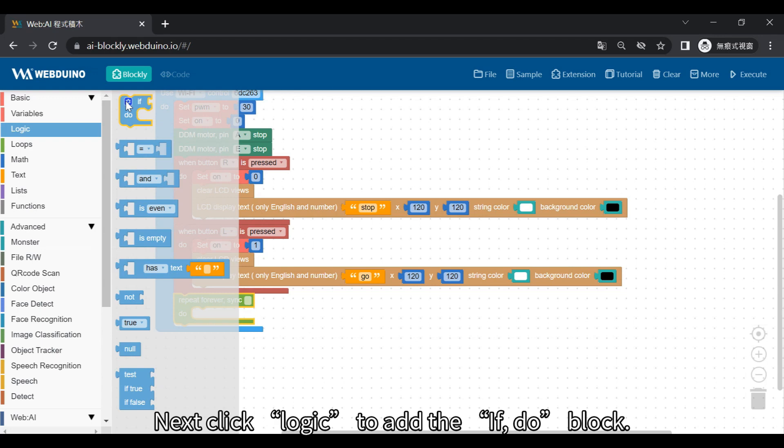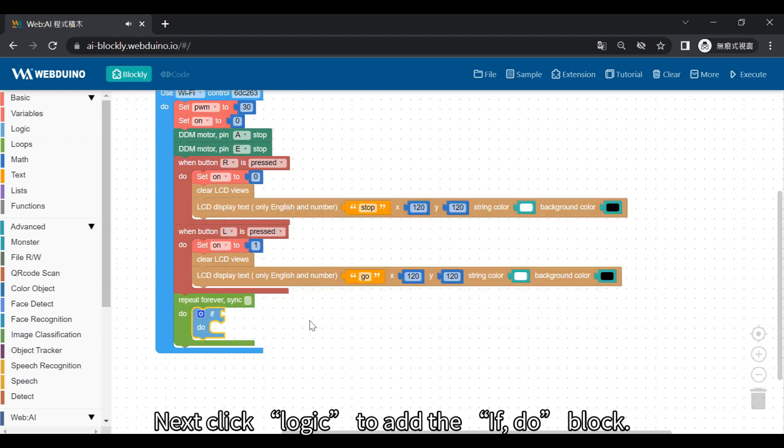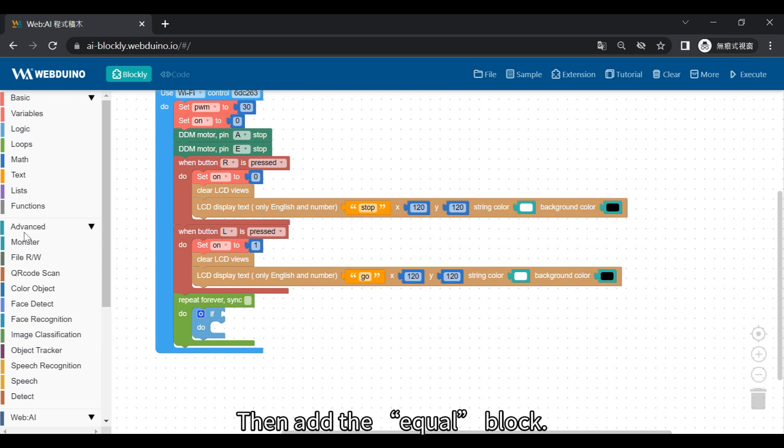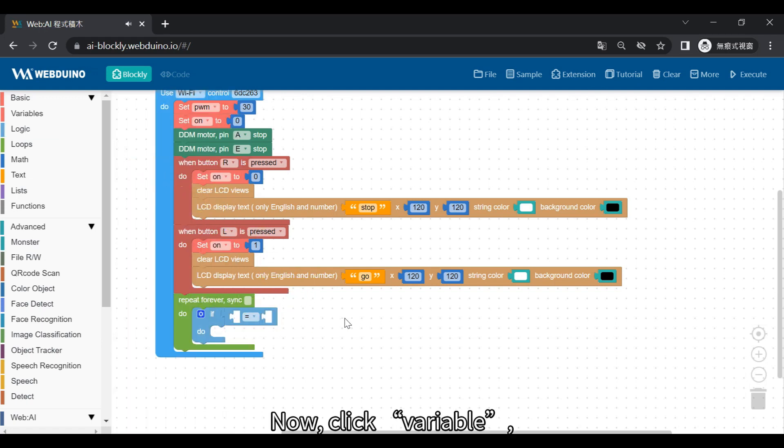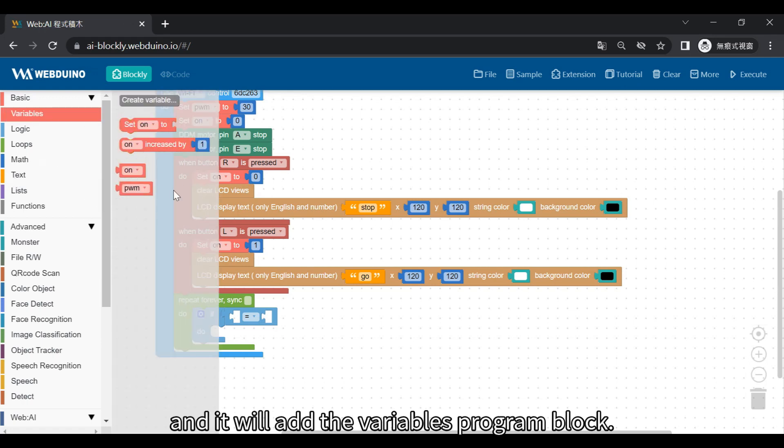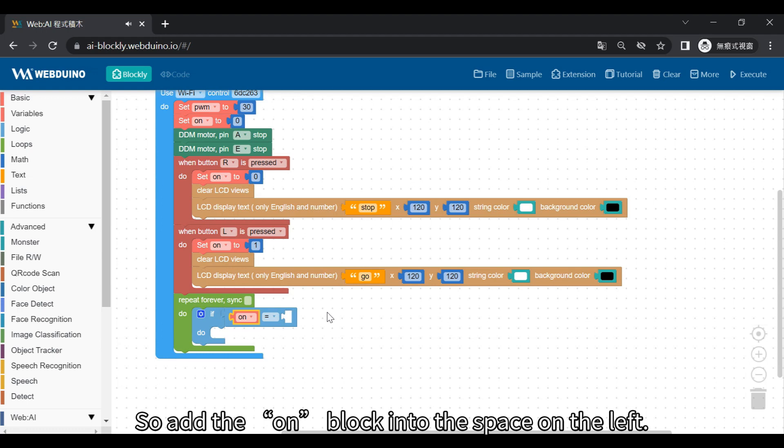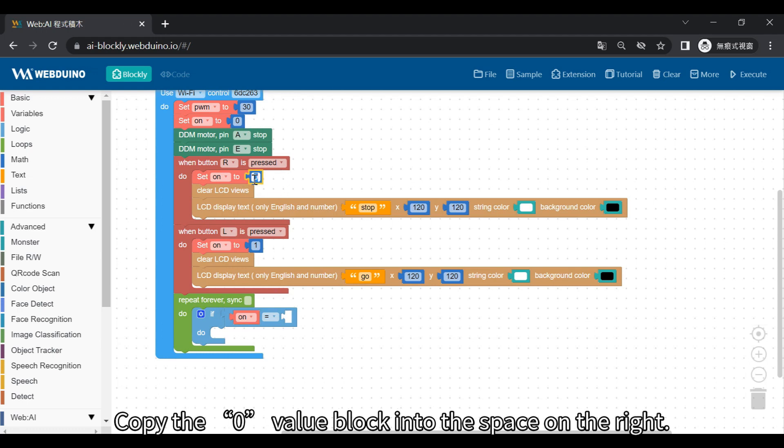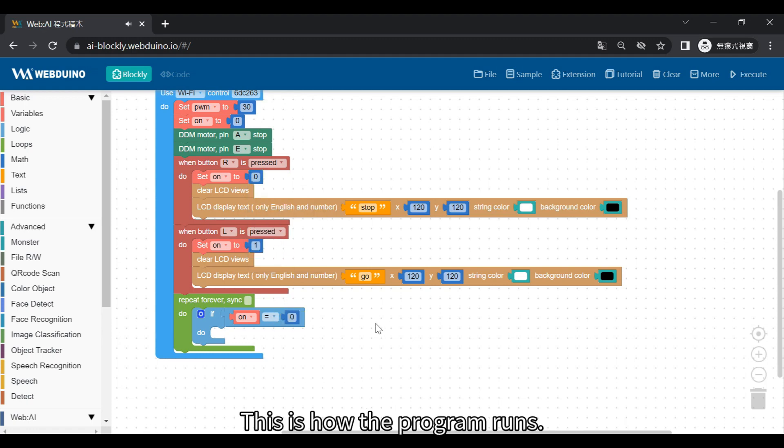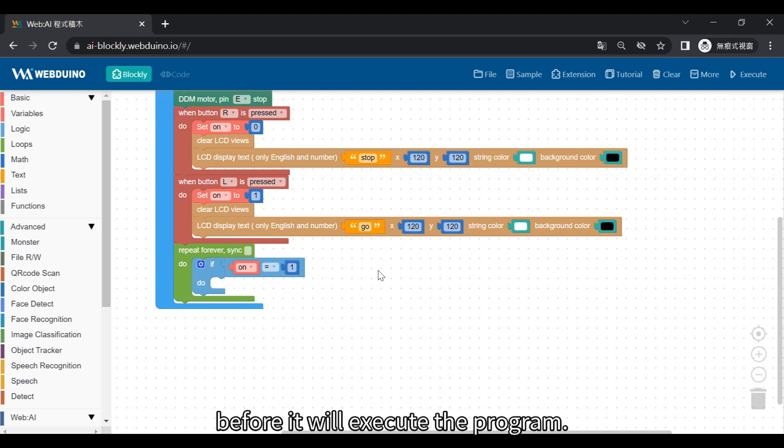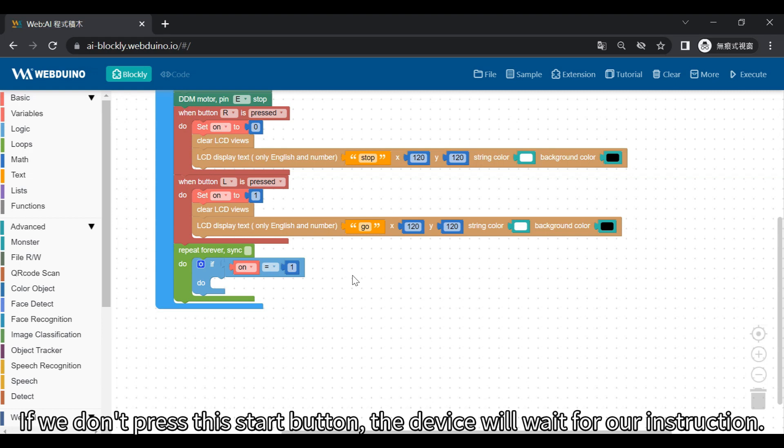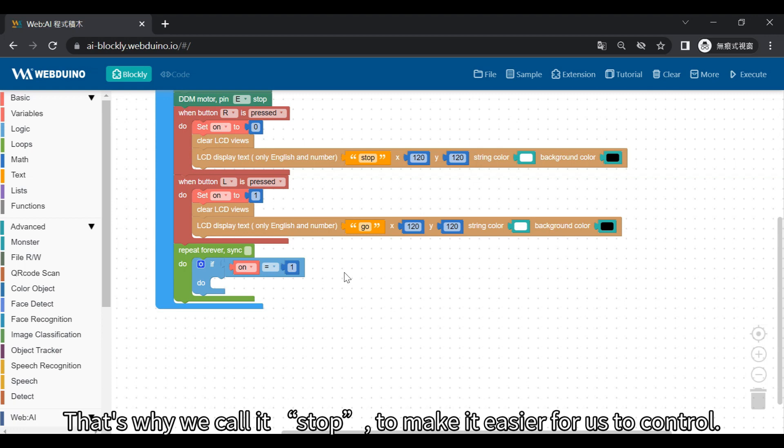Next click logic to add the if, do block. Then add the equal block. Now, click variable and add the variable's program block. So add the on block into the space on the left. Copy the zero value block into the space on the right. This is how the program runs. Why do we need to set variable on so it's equal to 1? Because then we have to press this button before it will execute the program. If we don't press the start button, the device will wait for our instruction. That's why we call it stop, to make it easier for us to control.